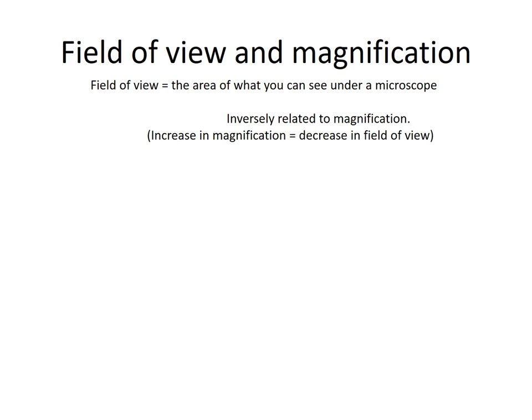Magnification is going to interact with how much area you can see on that slide. The area that you can see under a microscope is called the field of view, and the field of view is inversely related to magnification. That means if you increase the magnification, you will decrease the field of view. Likewise, if you decrease the magnification, you will increase the field of view.